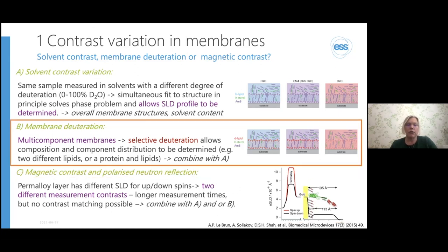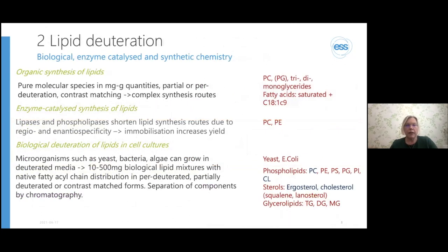Today I'll be mainly focusing on the membrane deuteration and what you can do with it. For that we look at lipid deuteration, because that is probably the most common way in which things are deuterated for membrane samples. It's possible to deuterate lipids either biologically, by enzyme catalysis, or by conventional organic synthetic chemistry. They all do different things and achieve different things.